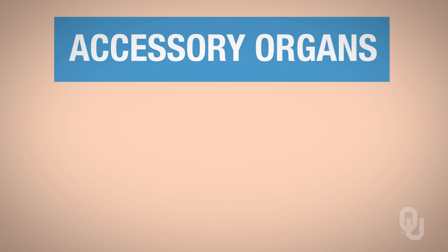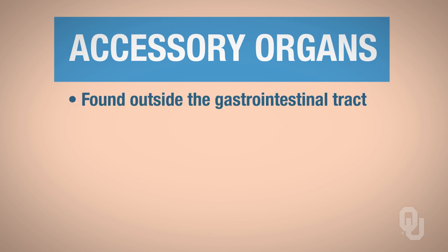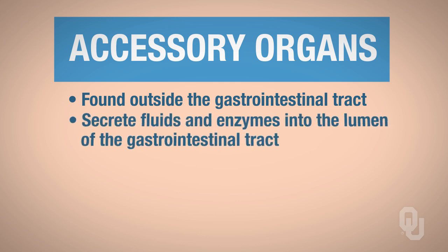The accessory organs are found outside of the GI tract, so they're not included in the major structures we'll be discussing. The accessory organs secrete fluids and enzymes into the lumen of the GI tract.